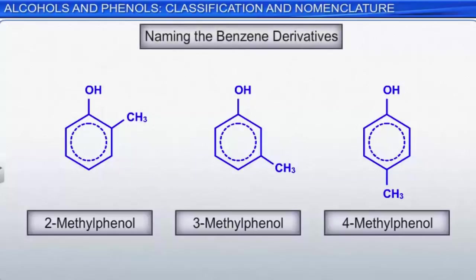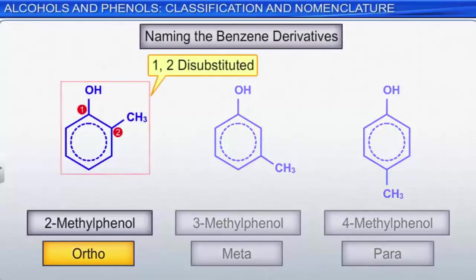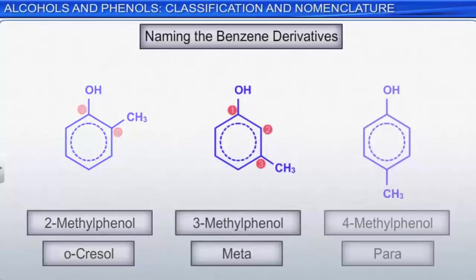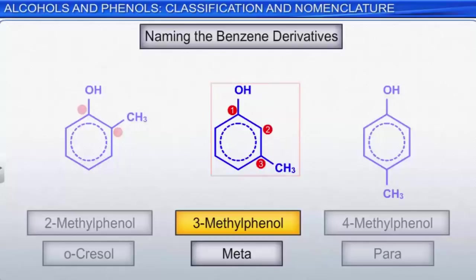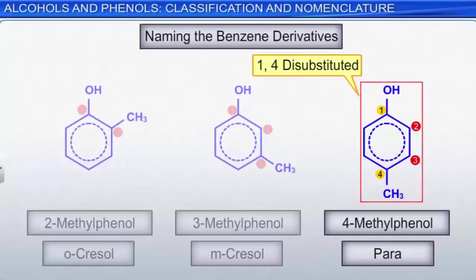We can use the prefixes ortho, meta, and para to name benzene derivatives. Ortho refers to 1,2-disubstituted benzenes, so 2-methylphenol is also named ortho-cresol. Meta refers to 1,3-disubstituted benzenes, so 3-methylphenol is also called meta-cresol. The prefix para is used for 1,4-disubstituted benzenes; therefore, 4-methylphenol is also called para-cresol.